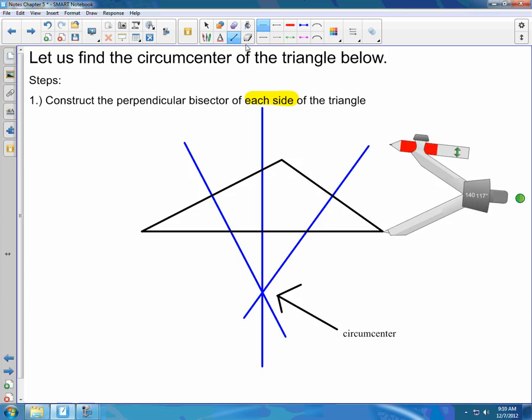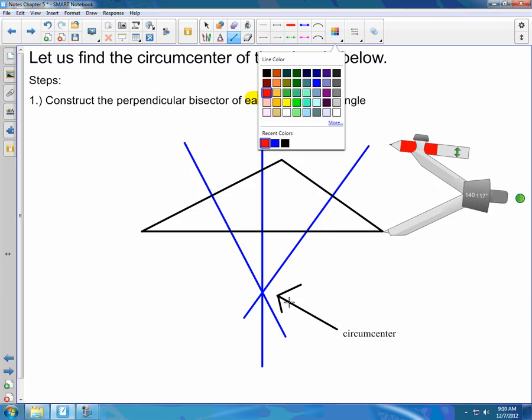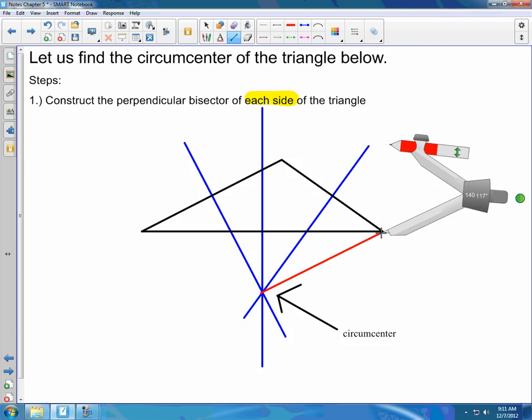Remember that the circumcenter is equidistant to the three vertices. So in red here, then, this distance should be equal to this one and should be equal to this one.